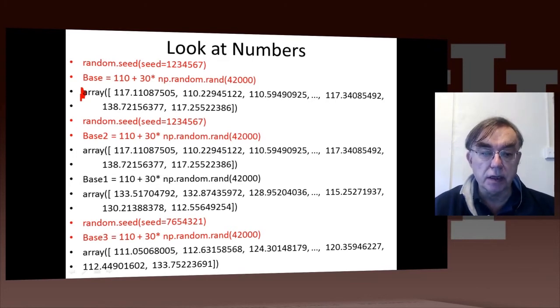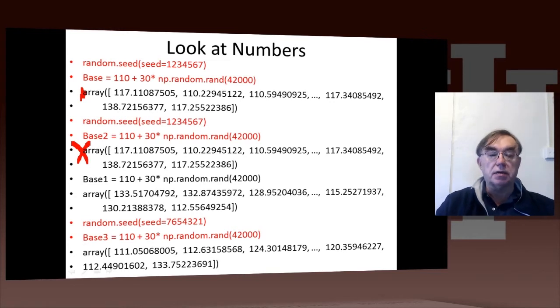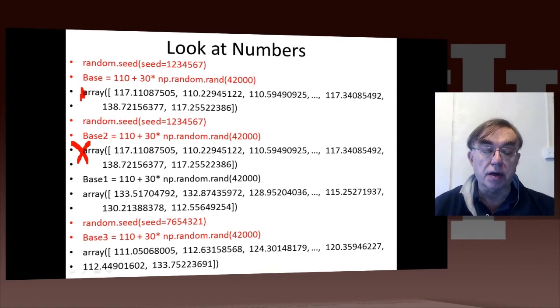If we look at this one, the first number is 117.110087505. And then if we go to base2, it actually has the same seed as base and it has the same value. So here in detail, we saw that previously with the actual histogram. Here we see it in detail in the numerical values of the random variables.